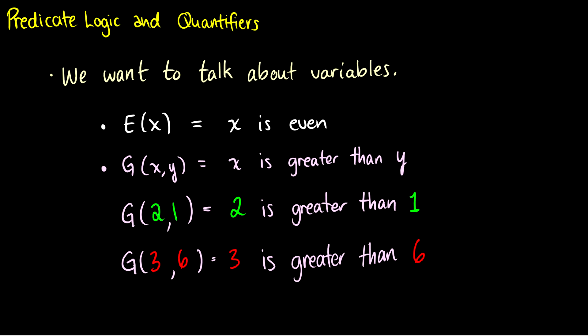And these are variables. But we can stick in these constants as well. So G(2,1), if we just ignore this 'x is even' thing here, if we have G(x,y), 'x is greater than y,' if we plug two and one in, this says that two is greater than one. And this has a truth value. So this statement is true.